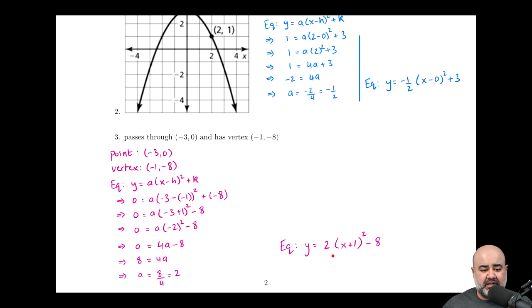So as we've done in the past two examples, we just come up with our equation, y equals a, which is two times the quantity x minus negative one, but minus and a minus will make a positive. So x plus one, the quantity squared plus k, which is negative eight.